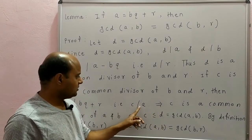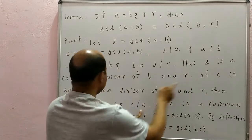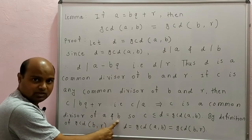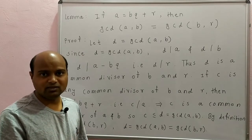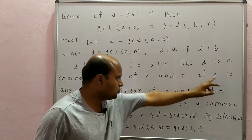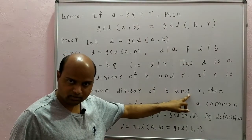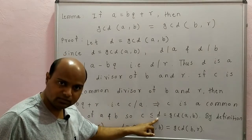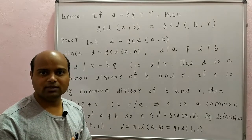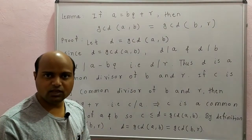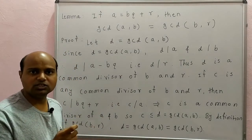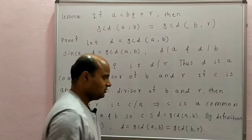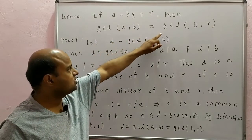C divides A, and we have already taken C to be a common divisor of B and R, therefore C divides B also. This implies C is a common divisor of A and B, so C is less than or equal to D. Why? Because D is the GCD of A and B. We have taken C to be any common divisor of B and R, and D is also a common divisor of B and R, but C is less than or equal to D. Therefore, by the definition of GCD of B and R, we have D is the GCD of B and R. Hence GCD of A and B equals GCD of B and R, which is what we had to prove.